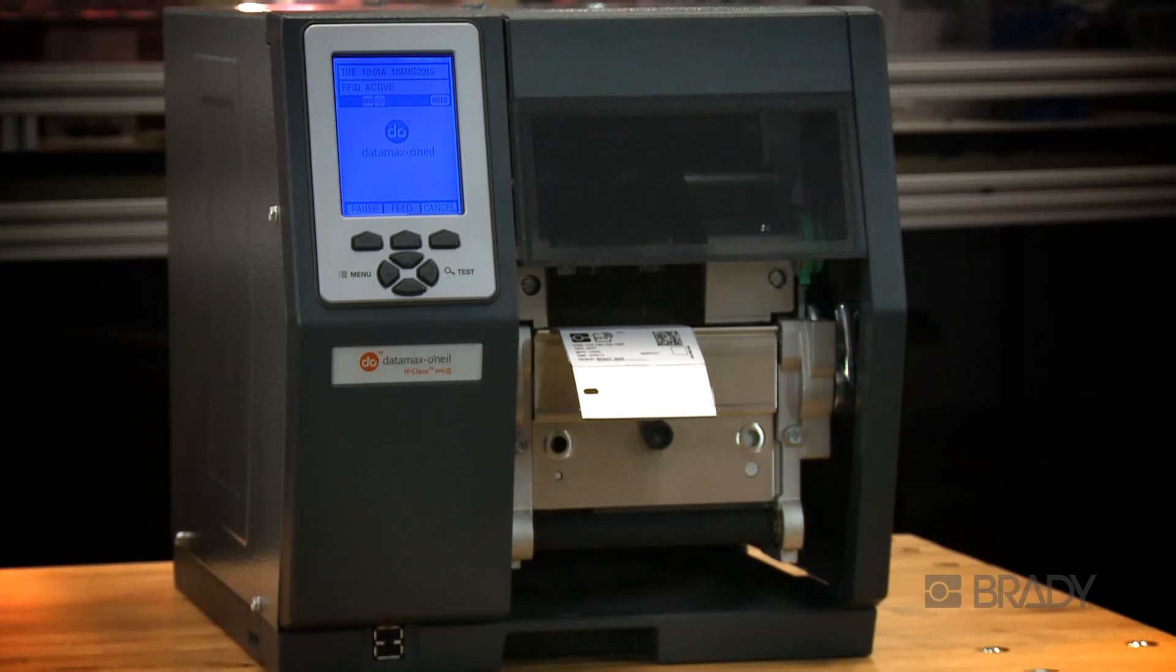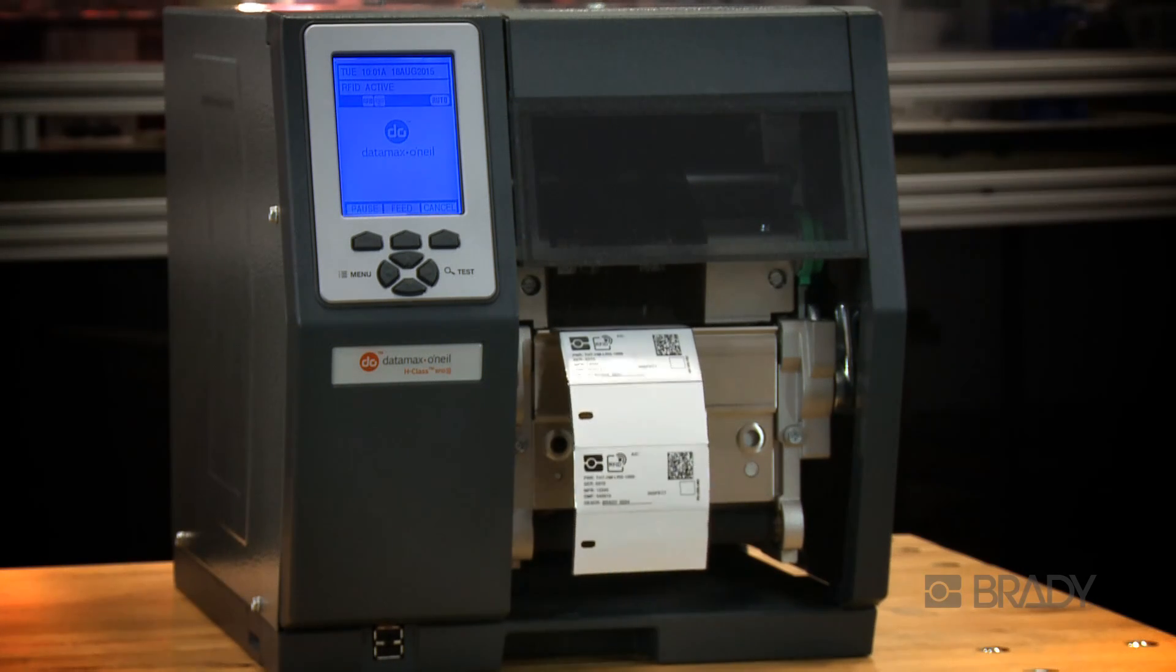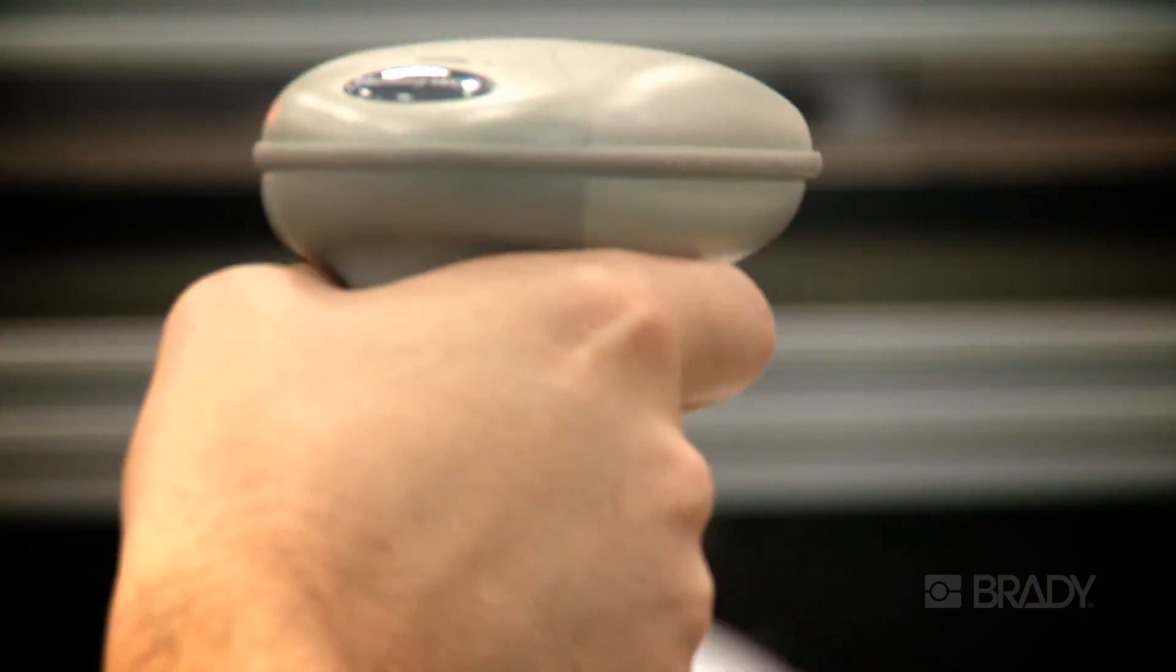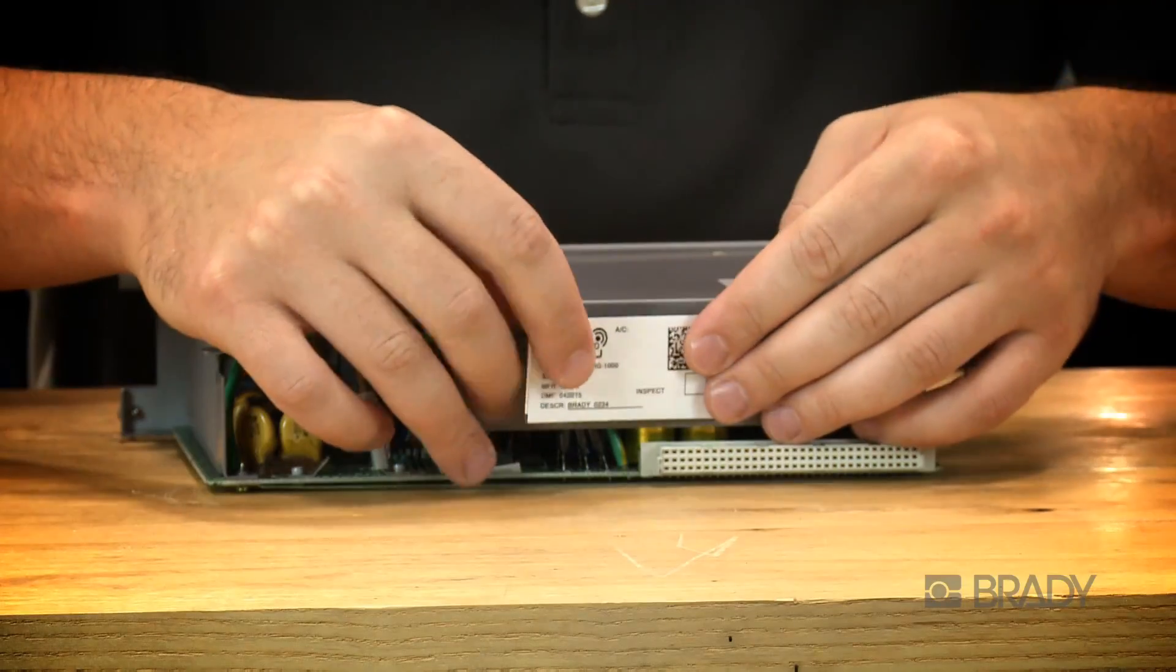RollStock labels allow for rapid printing of multiple serialized labels, or print automatically by scanning a work order or other barcode. Labels peel easily and affix permanently to critical parts.